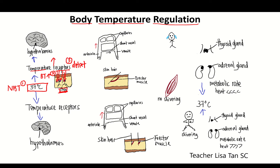And number four, the temperature receptor generates nerve impulses. The nerve impulses are sent to the hypothalamus by neurons. Once the nerve impulse reaches the hypothalamus, the hypothalamus is stimulated.